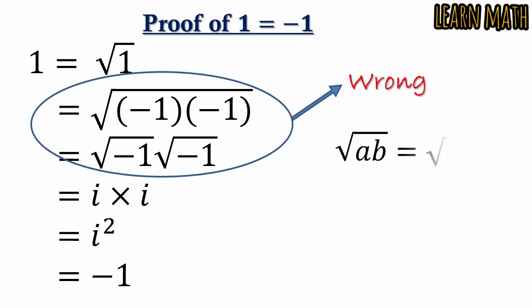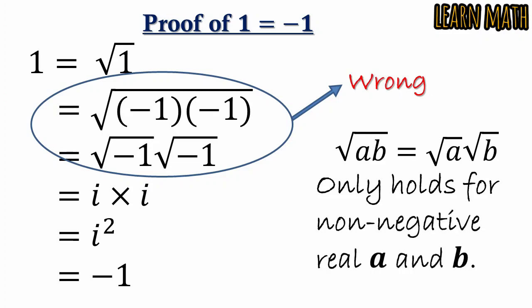Why? Because the property √(ab) equals √a × √b has a condition. This property only holds for non-negative real numbers a and b. Both a and b must be greater than or equal to 0. Then this property holds. Otherwise, it does not hold.